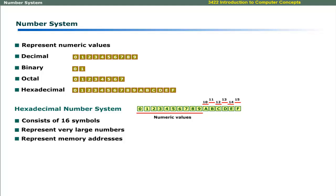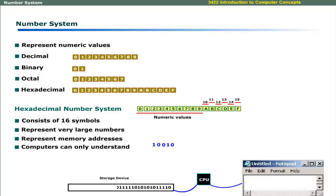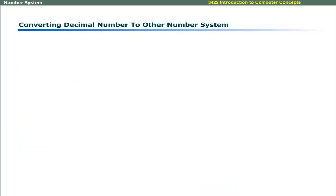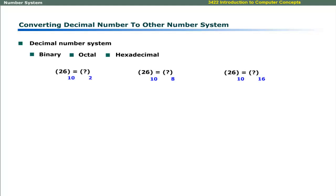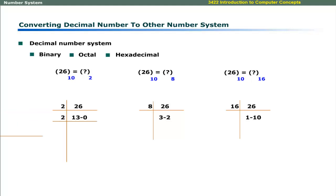Hexadecimal numbers are used to represent memory addresses. Dear learners, computers can only understand binary numbers. Numeric and alphanumeric expressions need to be converted to binary numbers before processing, and the results are then converted back to the required expression. To convert a decimal number to its binary, octal, or hexadecimal equivalent: divide the decimal number by the base of the desired number system, repeat until the quotient is less than the base, and read the remainders bottom-up.